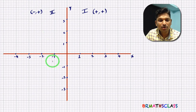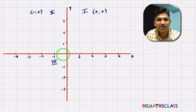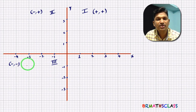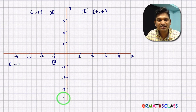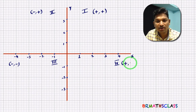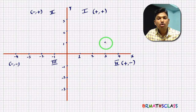The third quadrant is formed with the negative x-axis and the negative y-axis. That's why its x-coordinate is negative and its y-coordinate is also negative. The fourth quadrant is formed with the positive x-axis and the negative y-axis, so its x-coordinate is positive and its y-coordinate is negative.